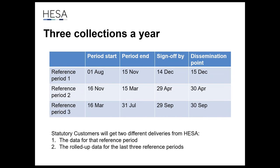There are three reference periods a year. The first two columns show start and end dates: beginning of August to mid-November, mid-November to mid-March, and mid-March to end of July. When providers send us data, anything happening between those dates counts in that return. We also refer to collections — the sign-off and dissemination points — which are slightly longer than the reference period.